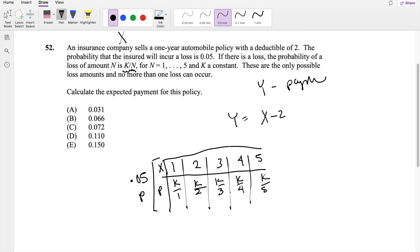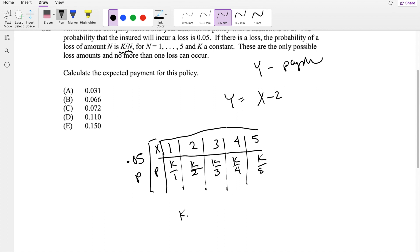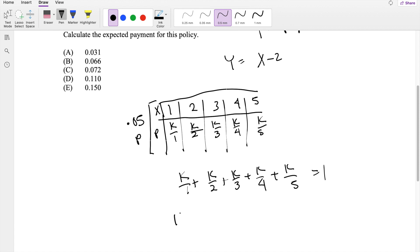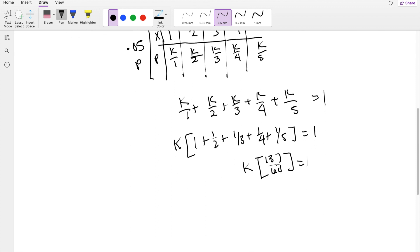We know all probability has to add up to 1. So K over 1 plus K over 2 plus K over 3, 4, and 5 must equal 1. Factoring out K, 1 plus 1/2 plus 1/3 plus 1/4 plus 1/5 equals 1. K times 137 over 60 equals 1. So K must be 60 over 137.